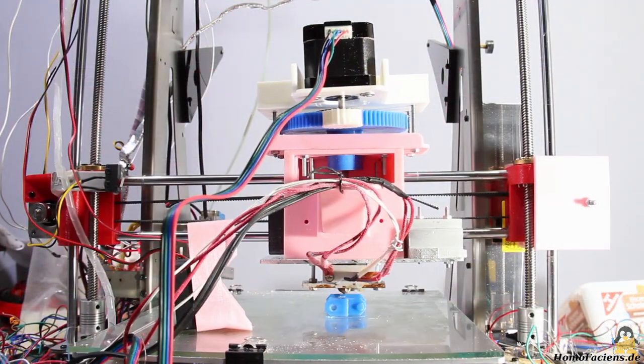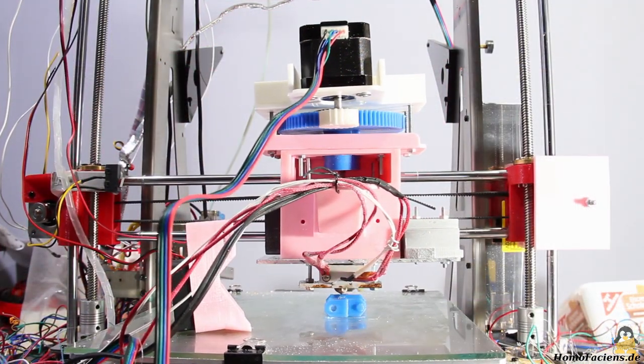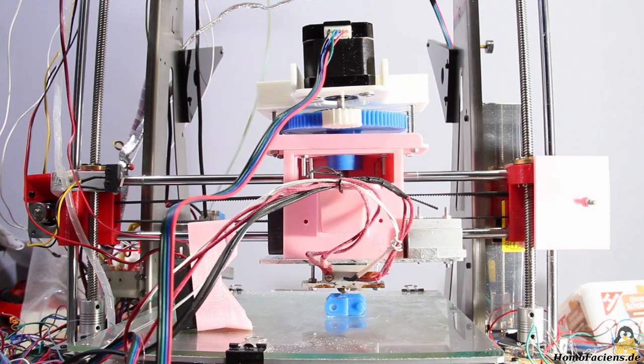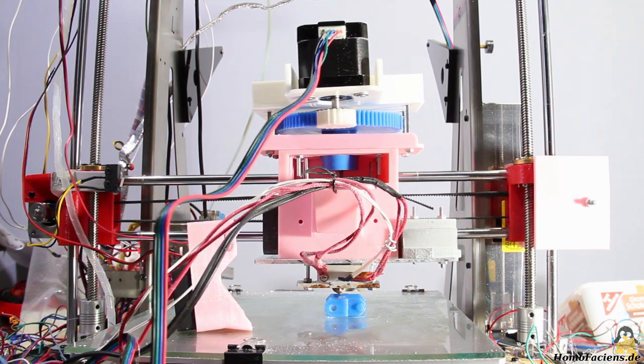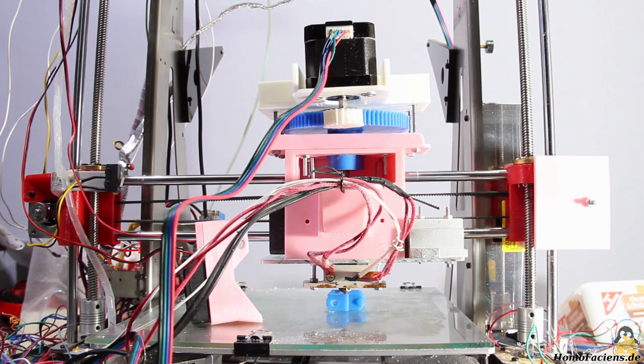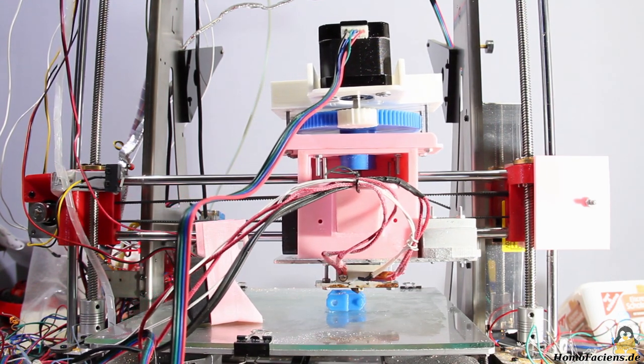Here the extruder is used to create a really tiny print with the dimensions 27x25x12mm. The layer height is set to 0.2mm and the print speed is 10mm per second.